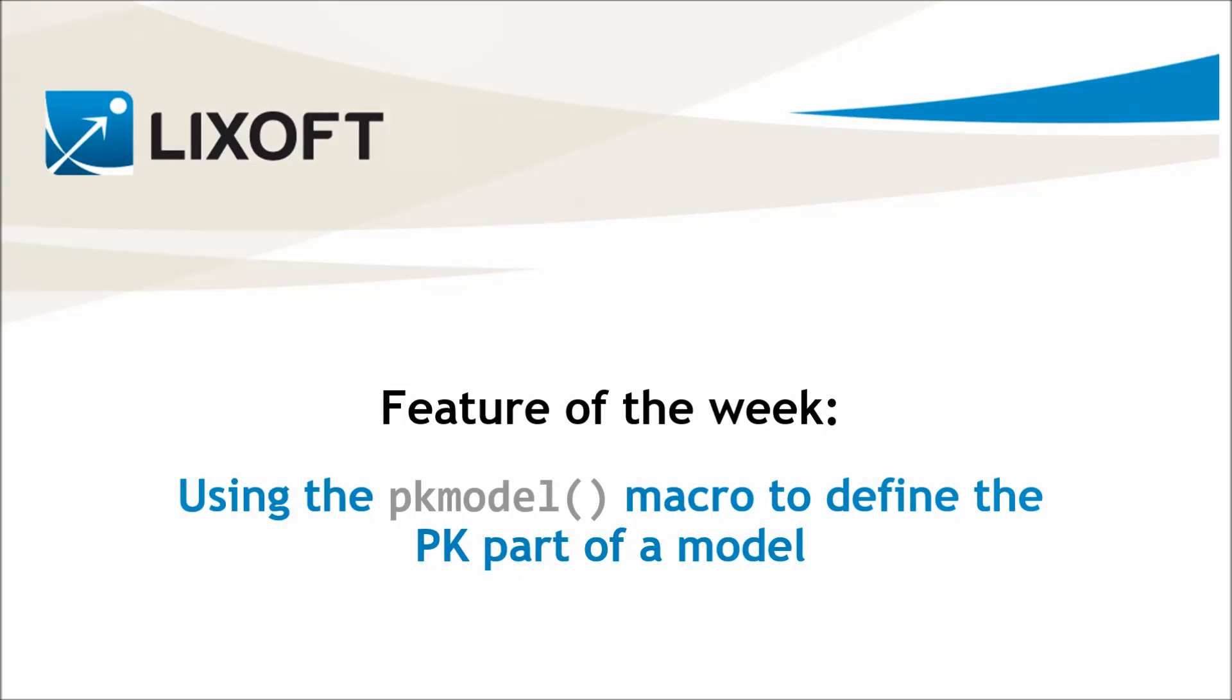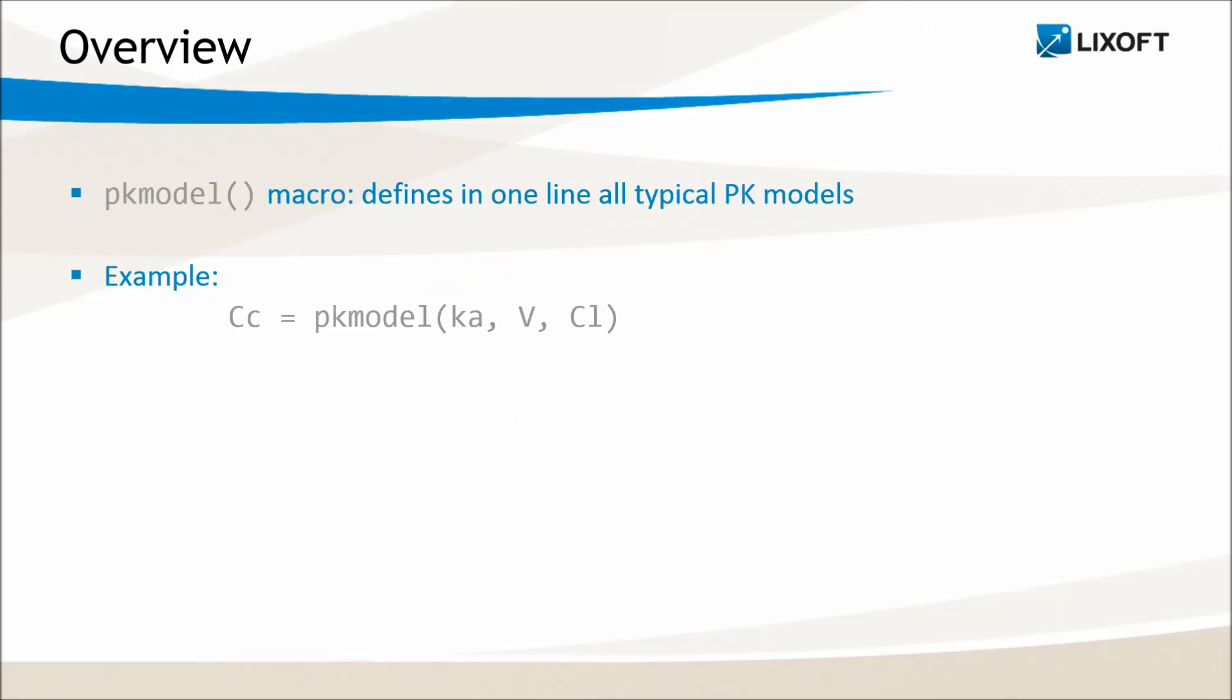Today I will explain how to use the PKModel macro to define the PK part of a model. The PKModel macro permits to define in one line of code all typical PK models. For instance, if you write Cc equals pkmodel(ka, V, Cl).